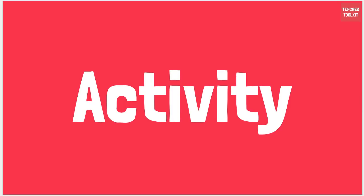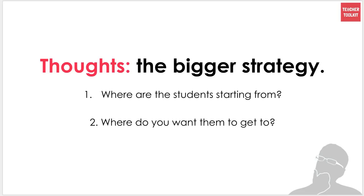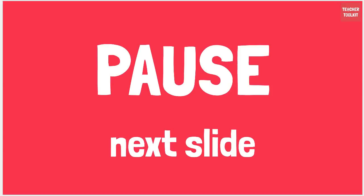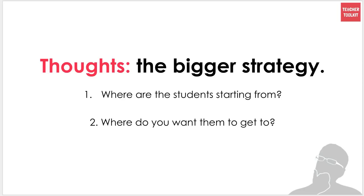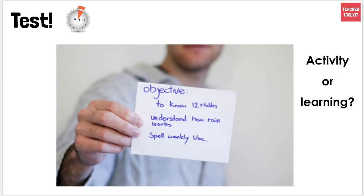We're going to go into an activity. I'm going to keep coming back to these two questions: Where are your students starting from? Where do you want them to get to? Before the next slide, think about a lesson you're going to teach tomorrow or next week. I'd advocate getting a bit of paper and a pen. Then take a look at this image — it has three simple objectives. Are these objectives designed for an activity, or are they designed with learning in mind? Pause the video, give yourself 30 seconds, jot down an answer.